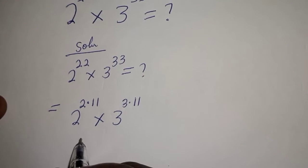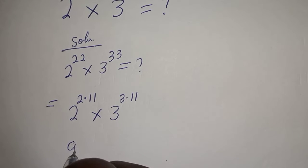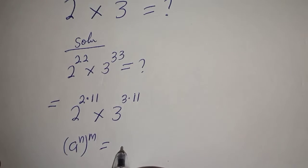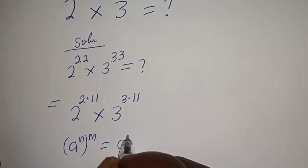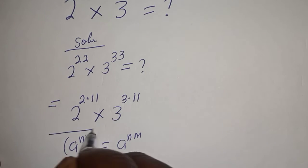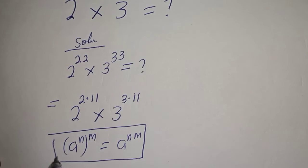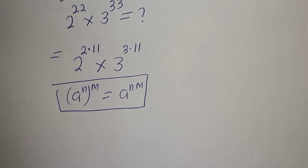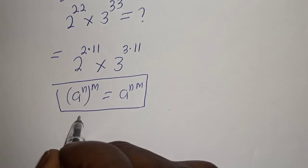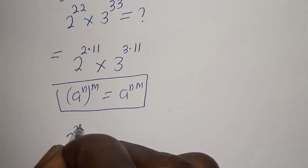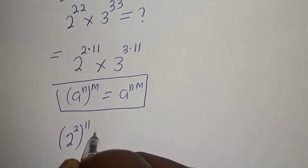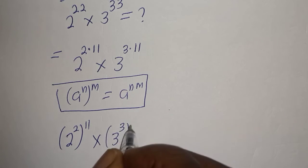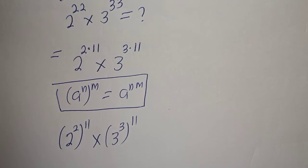Take note that if you have a raised to power n, to the power of m, this is equal to a raised to power n times m. Then, this can be written as 2 raised to power 2, to the power of 11, multiplied by 3 raised to power 3, to the power of 11.